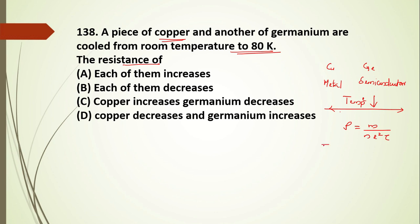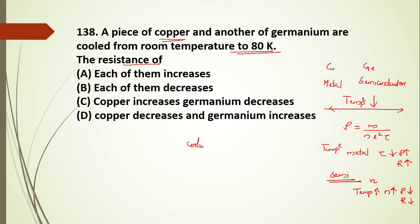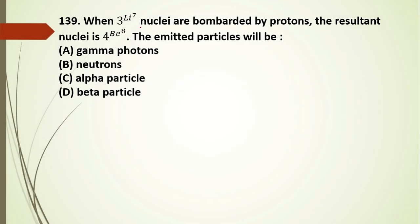For a metal like copper, as temperature decreases, relaxation time increases and hence resistivity and resistance decrease. For a semiconductor like germanium, cooling reduces the number of charge carriers, so the resistance of germanium increases. Thus copper's resistance decreases and germanium's resistance increases. The answer is D.